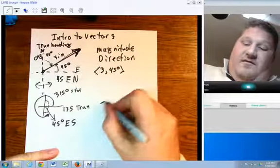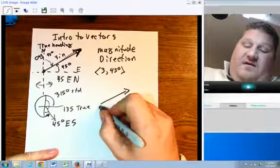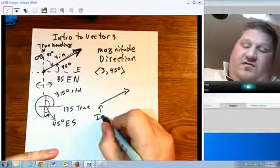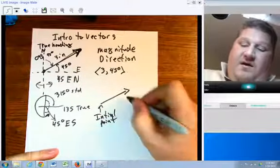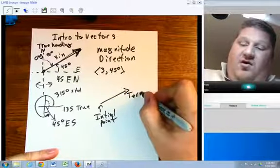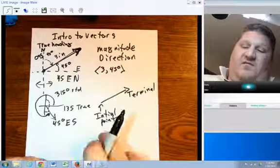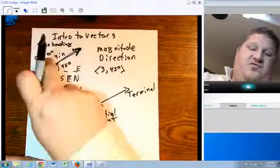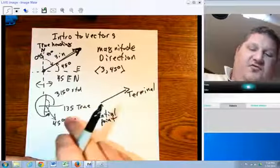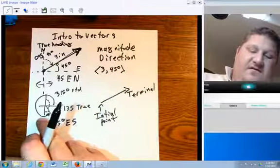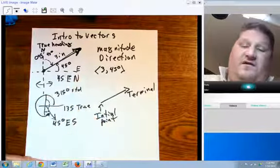With any vector, we have this point here where it starts - this is the initial point. And the point where it ends becomes the terminal point. So we have initial point, terminal point, we have true headings, standard position, and quadrant headings off one side or the other of the north-south.